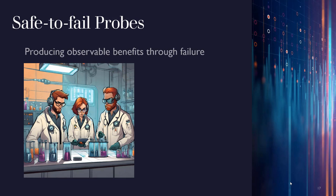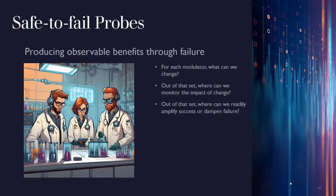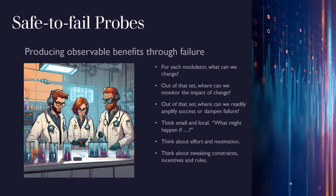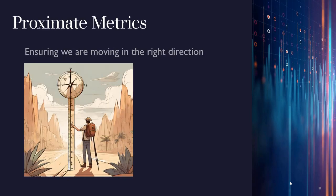Safe-to-fail probes are about producing observable benefits through failure. For each modulator we ask: what can we change, where can we monitor the impact of change, and where can we readily amplify success or dampen failure? We need to think small and local — what might happen if we tweak constraints, incentives, and rules? A recommended approach is to divide the room into groups of three, have each group look at certain probes, then rotate them so they can give feedback on each other's possible intervention ideas.